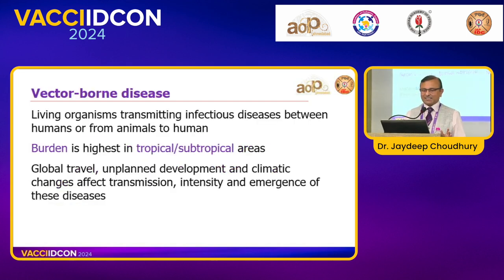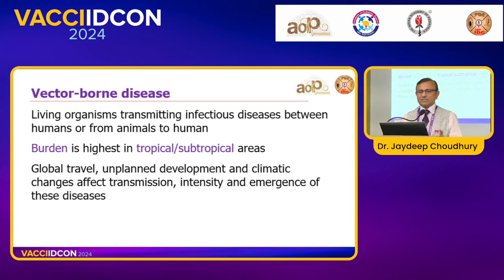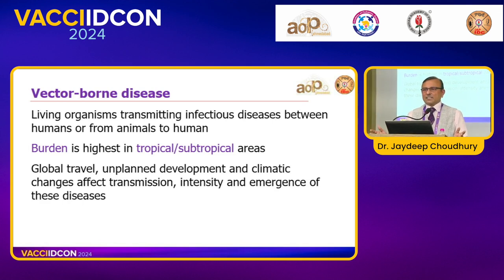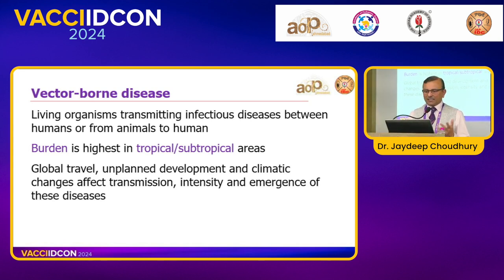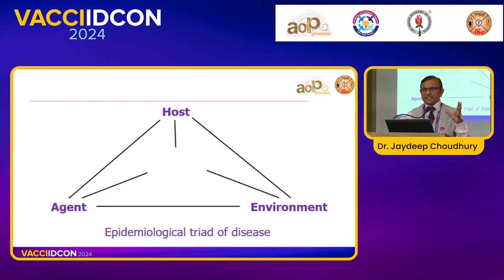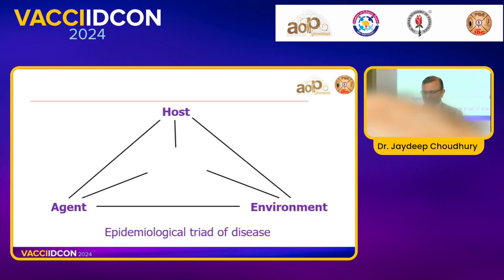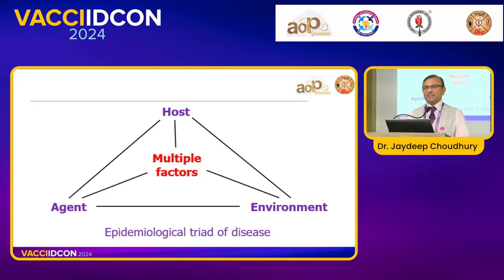Let us proceed to the basic facts. Vector-borne diseases are very relevant in a tropical country like ours. A vector is a living organism transmitting infectious disease between humans or from animals to humans — it's a via-media for transmission. Tropical and subtropical countries are the main targets, especially with increased global travel, unplanned development, and climatic changes which affect transmission intensity and emergence of disease. We see an interaction between the host, the agent, and the environment — the epidemiological triad — and multiple factors play into this transmission.